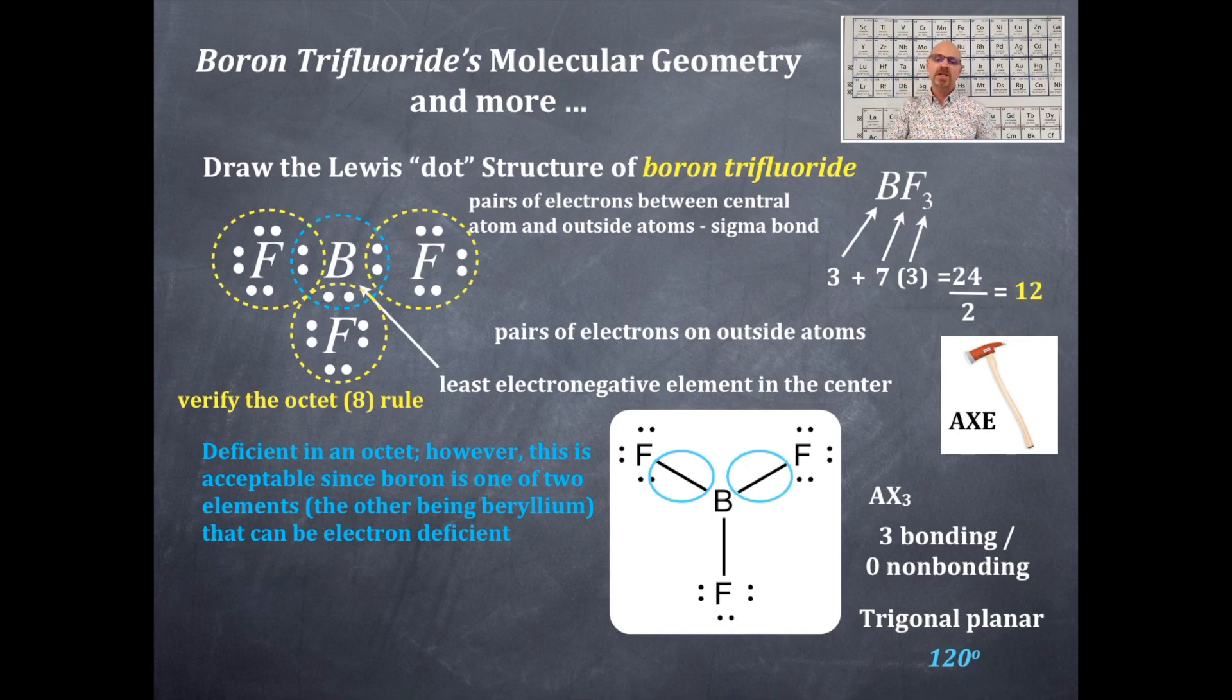Now I'm gonna get the hybridization so that's sp1p2, that's sp2 hybridized. Now is this polar or nonpolar? Does it have polar bonds? Absolutely, that means the fluorine is more electronegative than the boron because fluorine is the most electronegative element. That's why it's not in the middle.